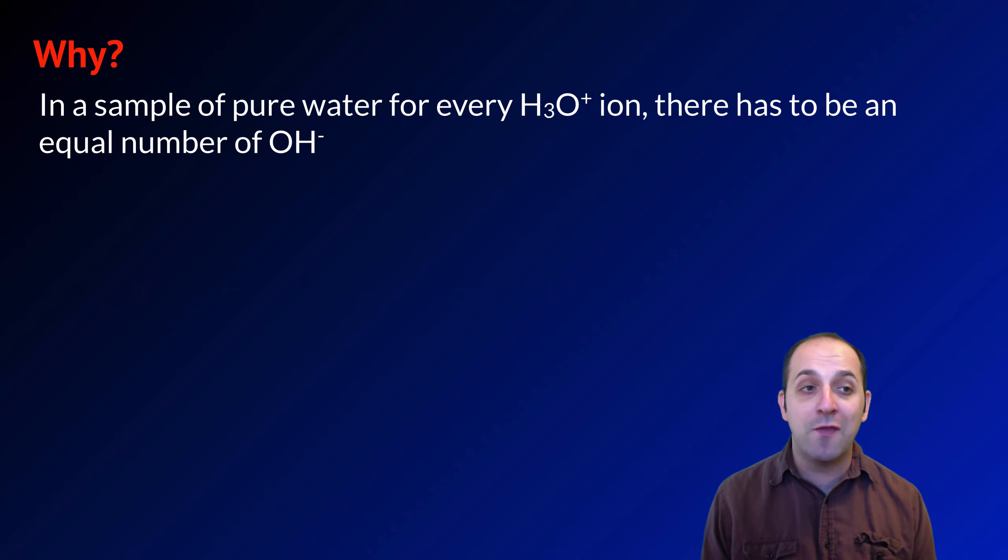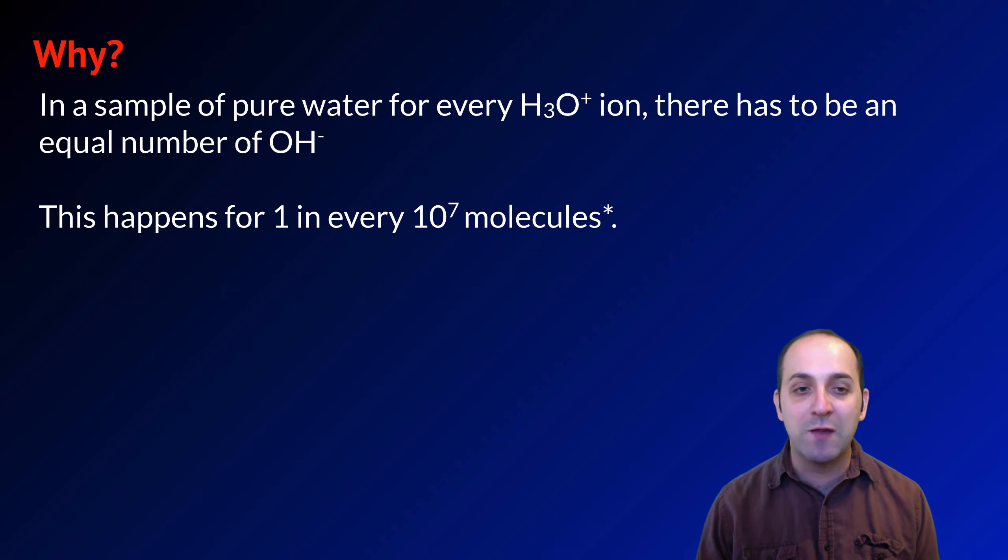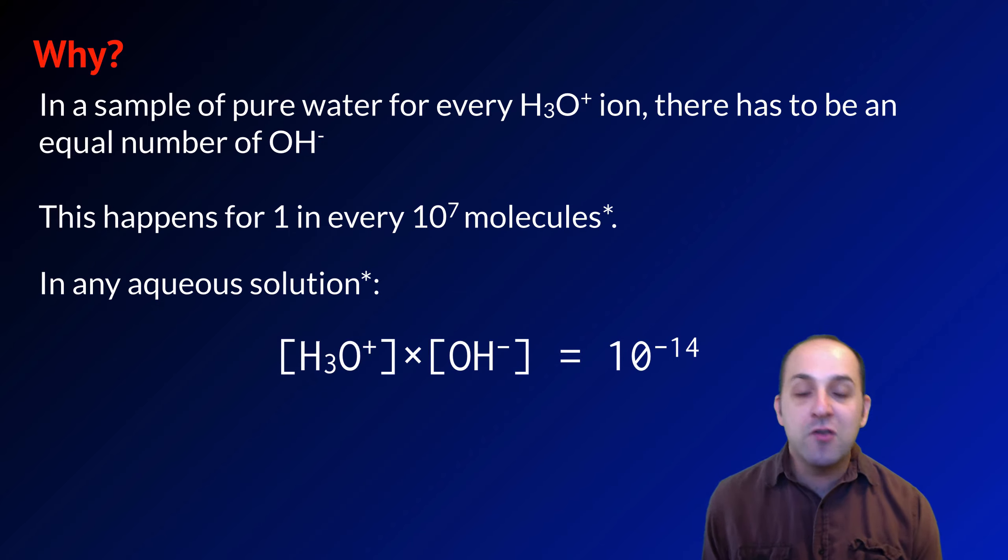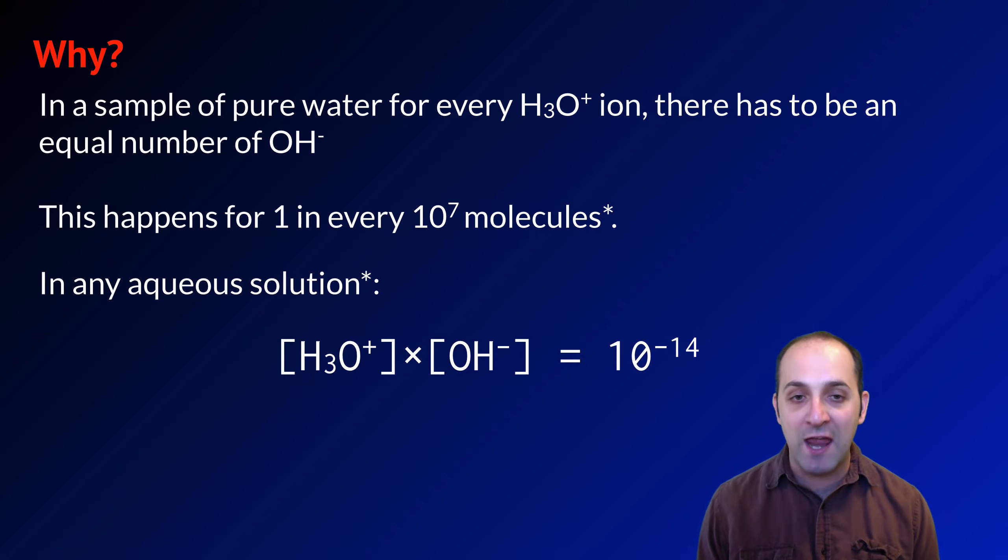So if we're just talking about a pure solution of water, for every hydronium ion, there has to be an equal number of hydroxide ions. At room temperature, this happens approximately for 1 in every 10 to the 7, or 10 million water molecules. But in any aqueous solution, the concentration of hydronium ions times the concentration of hydroxide ions has to equal 10 to the negative 14.